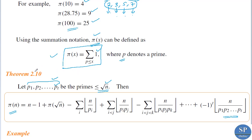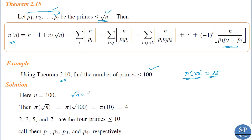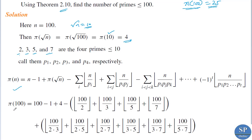We illustrate Theorem 2.10 with an example: find the number of primes less than or equal to 100, i.e., find π(100). We already know π(100) = 25 and will verify it using the formula. Here n = 100, so √n = √100 = 10. We need π(√n) = π(10) = 4. The primes less than or equal to 10 are 2, 3, 5, 7, which we name p₁, p₂, p₃, p₄.